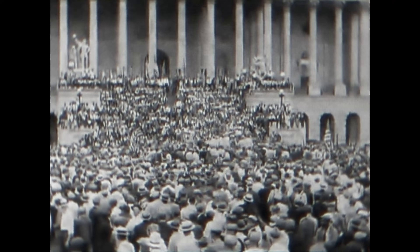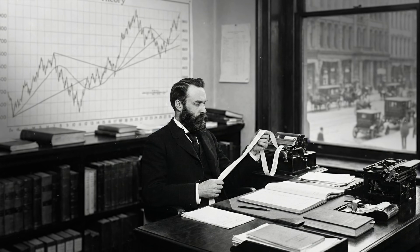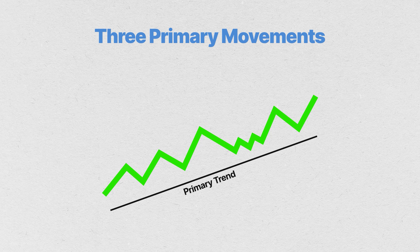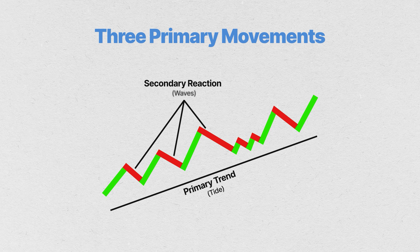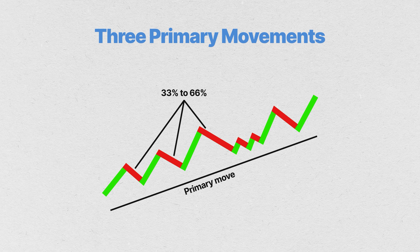Then came the Great Depression of 1929, and around that time was born the idea of value investing by Graham and Dodd, which essentially said every security has an intrinsic value irrespective of its price. Around the same time, there was a parallel development in technical analysis by Charles Dow. Dow identified three primary movements: the primary trend he called tide, the secondary reaction or waves, and minor trends or ripples. The secondary reaction is nothing but technical mean reversion — Dow observed that after a significant primary move, the market often undergoes a corrective phase that retraces 33% to 66% of the previous price change. This was the first reference of price reversion, especially after a trend had become overextended.